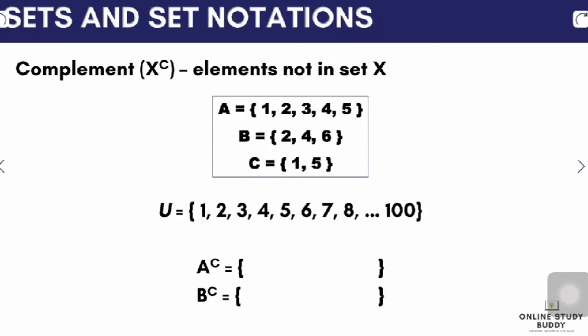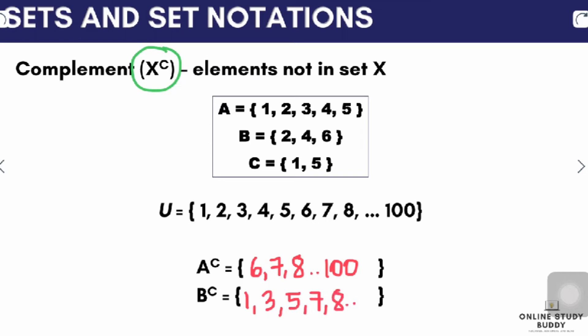The complement of a set is defined as elements that are not in set X but are found in the universal set. The symbol used is a tiny letter C at the upper right of the set name. For our example, the elements of set A are 1, 2, 3, 4, and 5. So the complement of set A is the set containing 6, 7, 8, up to 100. The complement of set B is the set containing 1, 3, 5, 7, 8, up to 100 — just identify what's not in the set but can be found in the universal set.